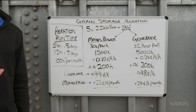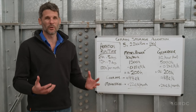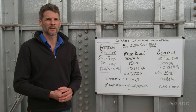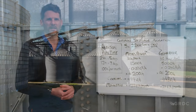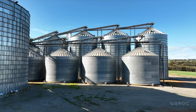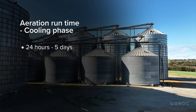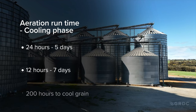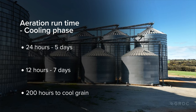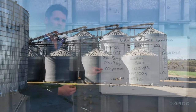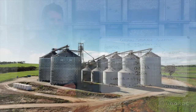When calculating the cost of running aeration cooling fans, the first thing to work out is how long the fans will actually run for. Controllers will typically do a cooling phase and then a maintenance phase. In the cooling phase, they'll run fans for 24 hours for the first five days, 12 hours for the next seven days — so about 200 hours. From then on, they'll run the fans for about 100 hours a month for maintenance mode.